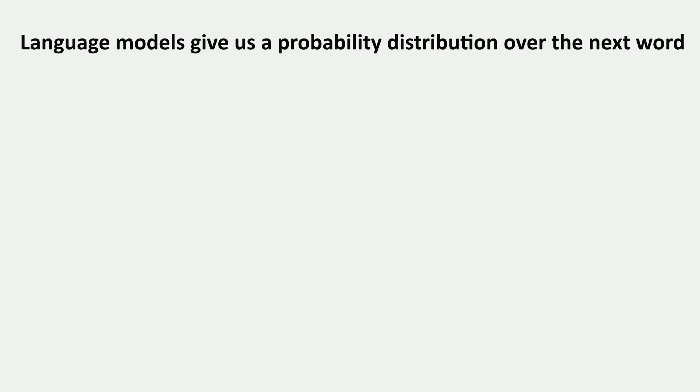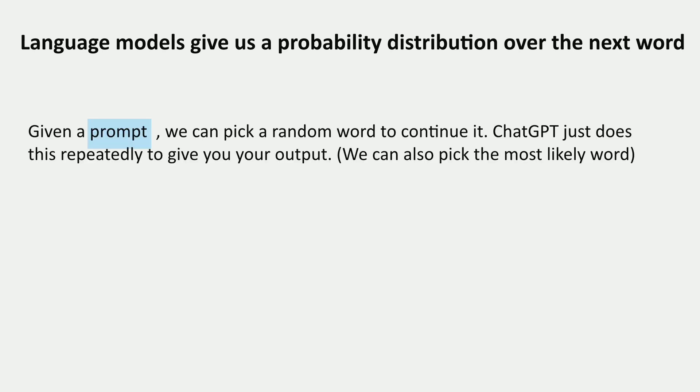We've talked about machine learning, language modeling, and how language models actually work and how these probability distributions look. Language models give us probability distributions over the next word, and ChatGPT just does this. Given a prompt, we pick a random word from the model's distribution to continue it, and we can do that repeatedly. We can either pick a random word or the most likely word. Let's look at what happens when we use the random word strategy.